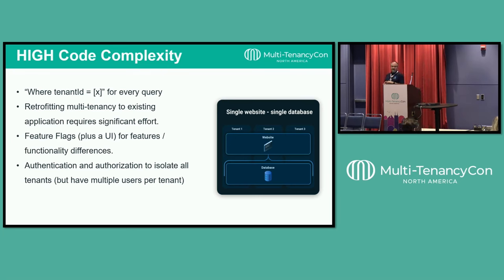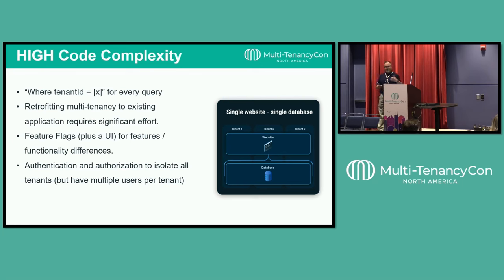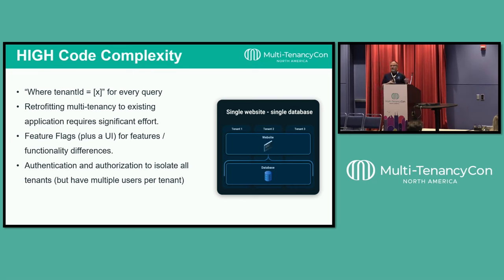One of the mistakes I made: I was brand new to an application, thought I knew what we needed to do, and it was like 'we just need to get this feature out the door for this one customer.' So I hard-coded the customer ID — where tenant ID equals 045. I can remember that number probably till the end of my days. We pushed that to QA and the number of tickets I got was astronomical. That's how you have to train all your developers to not make the same mistakes over and over again.